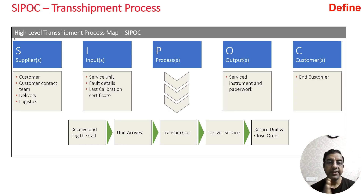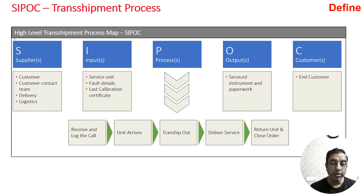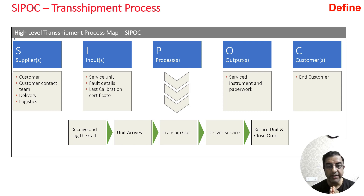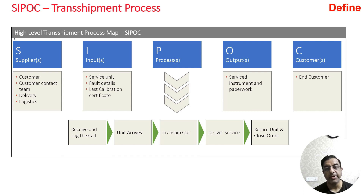To understand the high-level process, the team created a SIPOC — which stands for Supplier, Input, Process, Output, and Customer. Suppliers included the customer, the customer contact team, and delivery and logistics. The input was the servicing unit, fault details, and the last calibration certificate. The process involved receiving and logging the call, the unit arriving, sending it for transshipment, delivering the service, returning the unit, and closing the order. The output was the serviced instrument and paperwork, and the customer is the end customer.